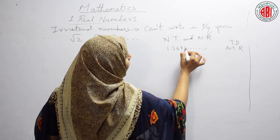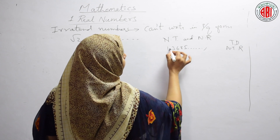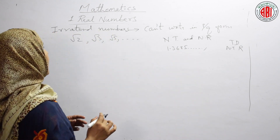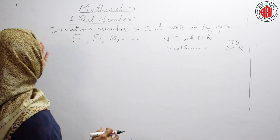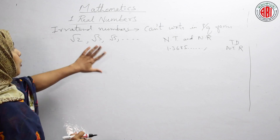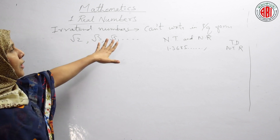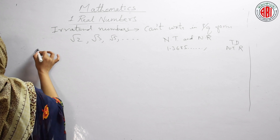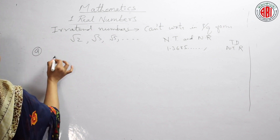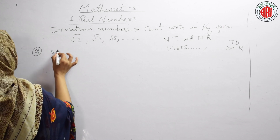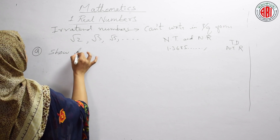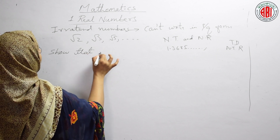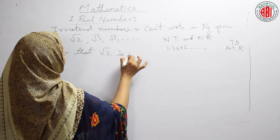Different numbers keep appearing — 3, 6, 8, 5 — any digits. This is just an example. Now, based on this, we have a problem: proving these kinds of numbers are irrational. We have the problem: show that √2 is irrational.